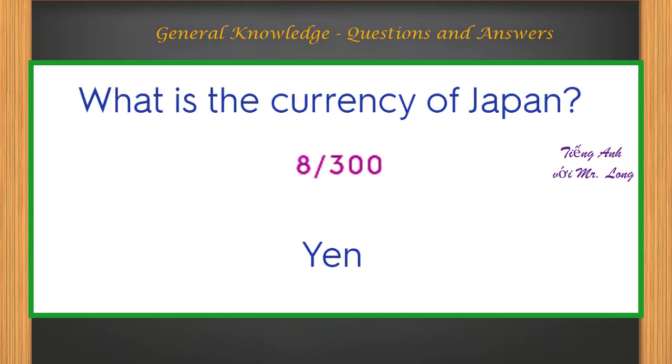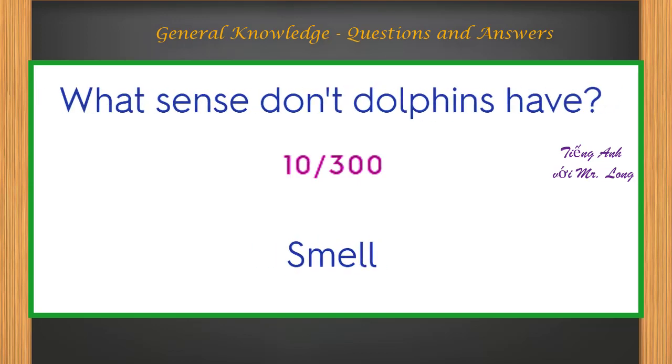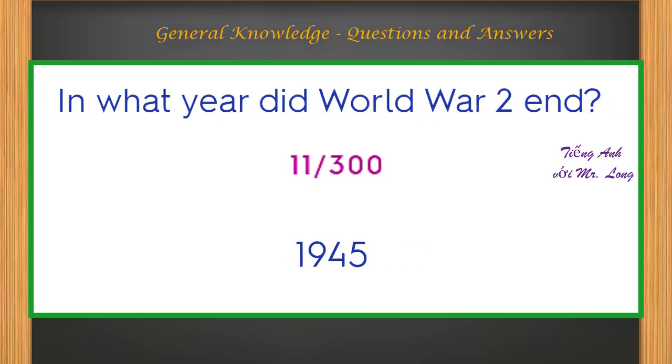What is the currency of Japan? Yen. Which planet has the most moons? Jupiter. What sense don't dolphins have? Smell. In what year did World War II end? 1945.